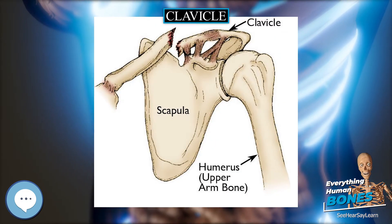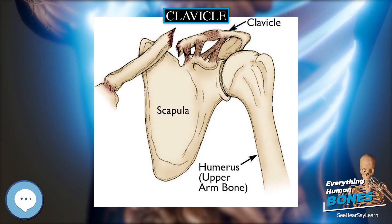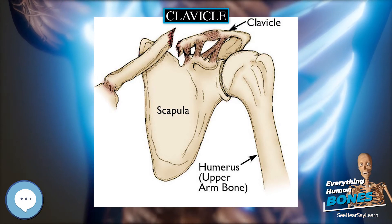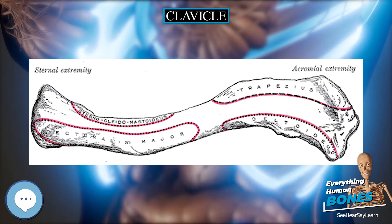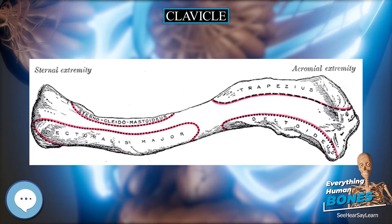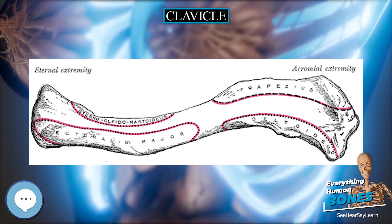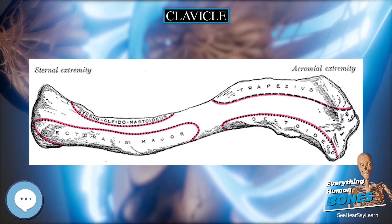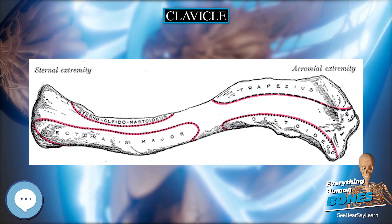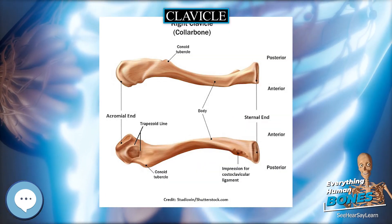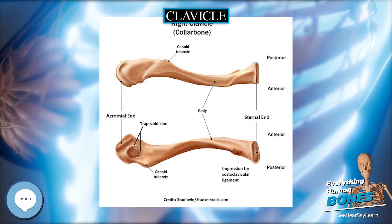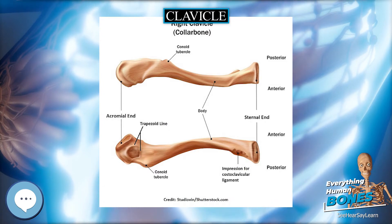The shaft is divided into the medial two-thirds and the lateral one-third. The medial part is thicker than the lateral. The lateral third of the shaft has two borders and two surfaces.